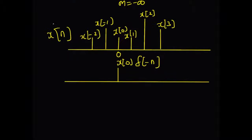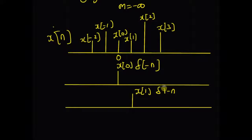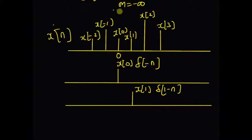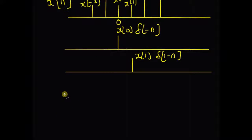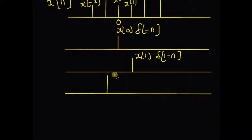The value at x of one can be represented as x of one multiplied by delta of one minus n. Similarly, we can represent the values at two, that is x of two, and at three, that is x of three, by using a weighted unit sample. And similarly, the values on the negative side can also be represented as weighted unit samples. For example, x of minus one can be represented as x of minus one multiplied by delta of one plus n.